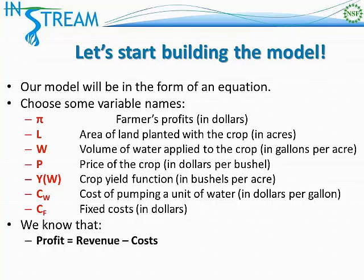We will also have two variables that represent cost. C sub W is going to be the cost of pumping a unit of water — remember that the cost of pumping a unit of water is the only variable cost in this model per our assumptions. And C sub F is going to represent our fixed costs. Using subscripts in variable names is usually an easy way to differentiate two variables that are otherwise the same; in this case both C sub W and C sub F refer to costs, but the subscripts allow us to differentiate them — one is for water and the other is for fixed costs.